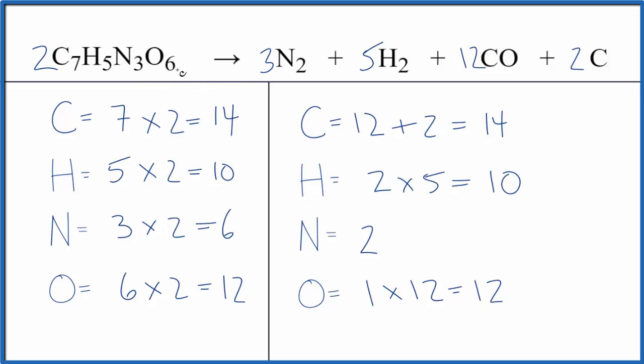This is Dr. B with the balanced equation for C7H5N3O6 yields N2 plus H2 plus CO plus C. If you were to write the states, they look like this.